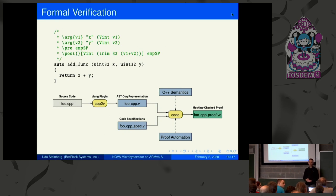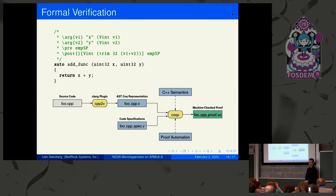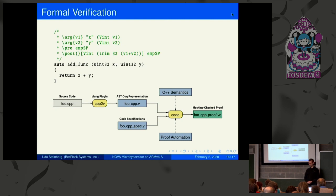Q: Will formal verification require re-architecting parts of Nova? We may find one or two things to change — perhaps not because they're incorrect, but because they make verification easier. Overall, we don't expect too many surprises about correctness, given that we and partners like Gnode exercise the system extensively in complex scenarios.